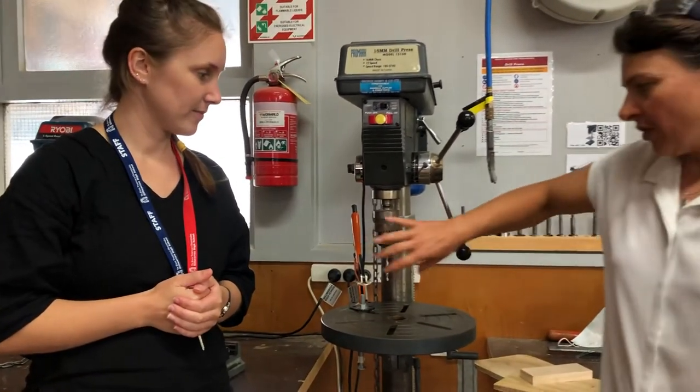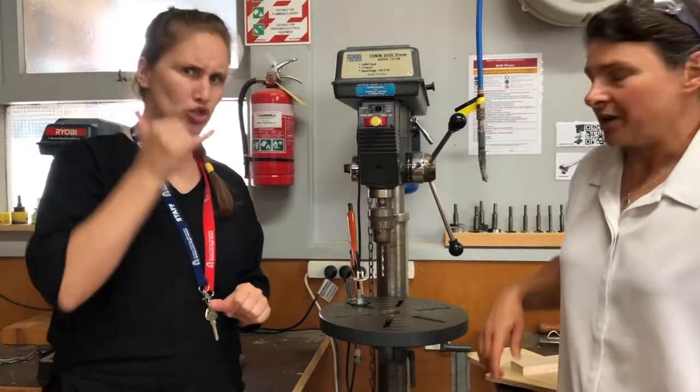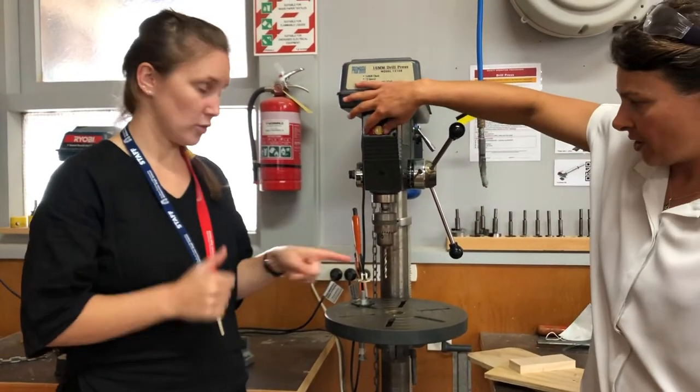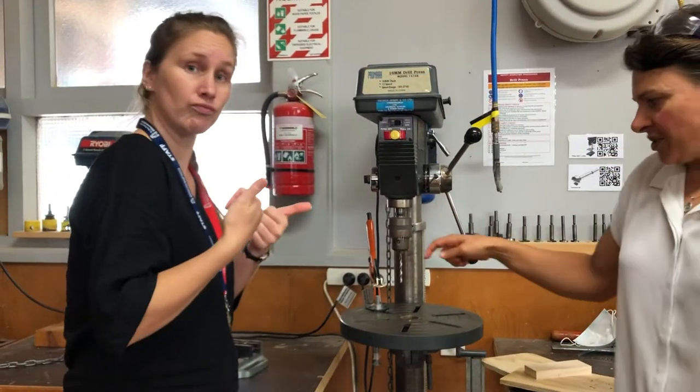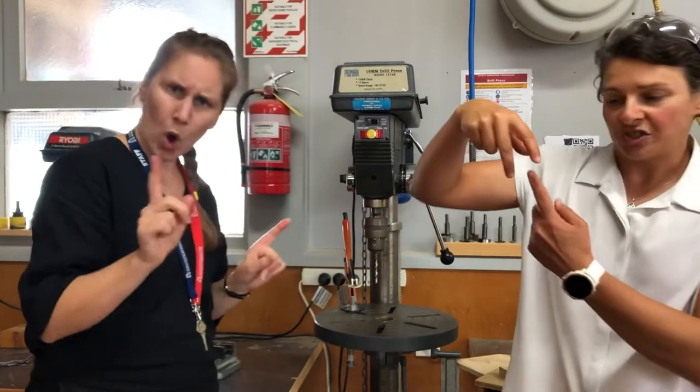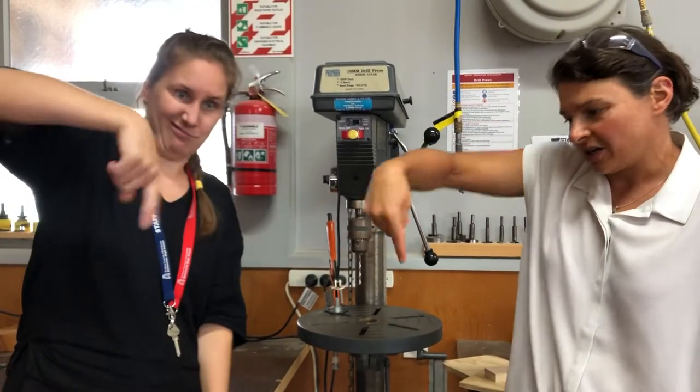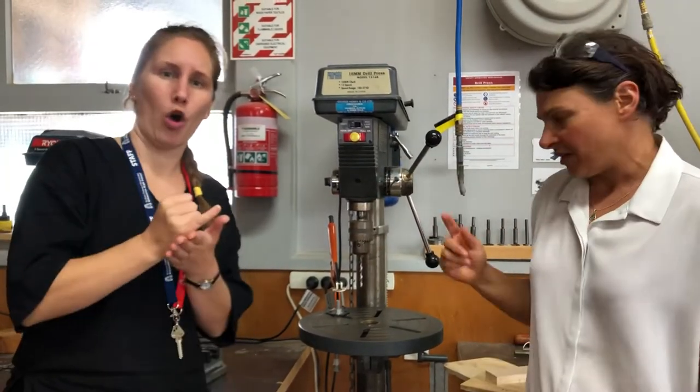Now I want to check that I've got that set in there properly. So I'm just going to give it a quick on-off spin. And what I would see if it wasn't in there level, if it was stuck just between two jaws, is I would see it go kind of out of center and spin, not level like that.